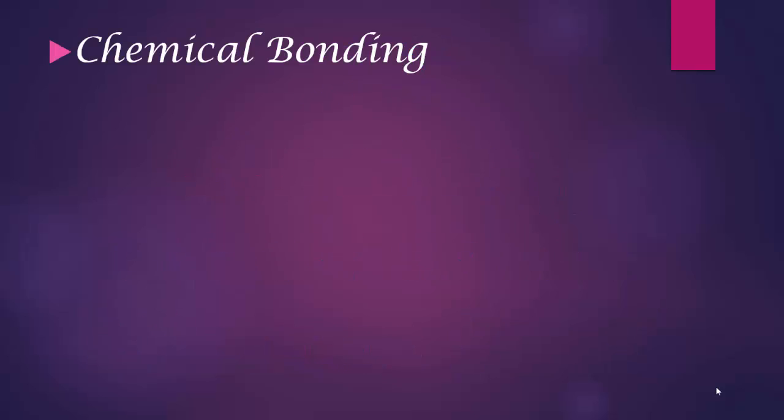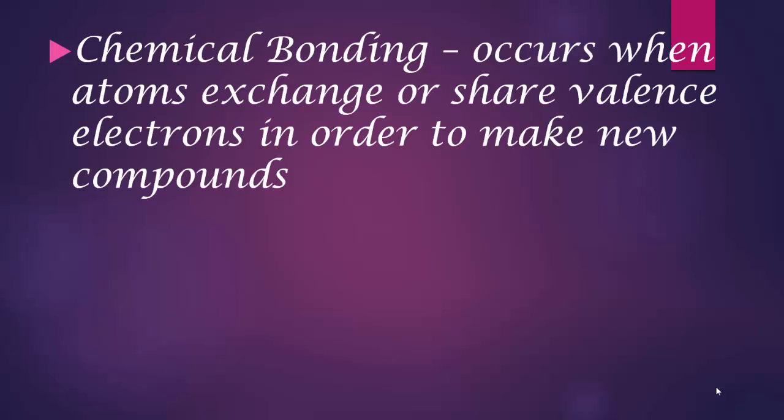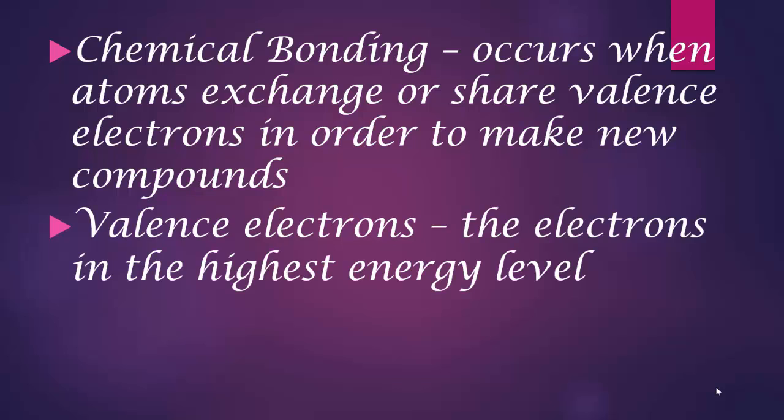We can say that chemical bonding occurs when atoms exchange or share valence electrons in order to make new compounds. As you recall from section 6, valence electrons are simply the electrons in the highest energy level.